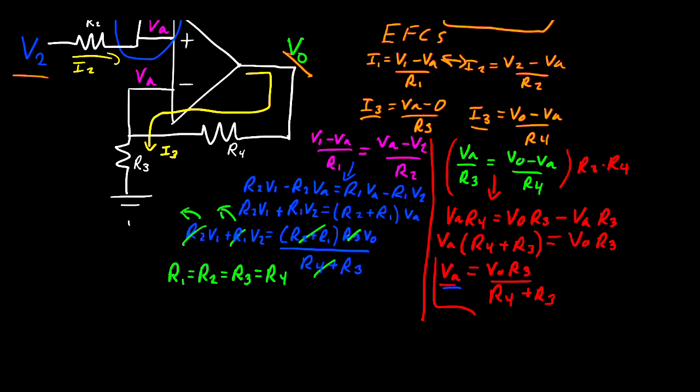This would leave us with a final answer that VO would be equal to V1 plus V2. And that is the non-inverting summing amplifier.